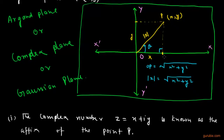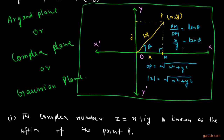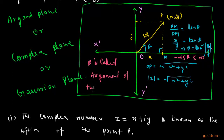Suppose this point is M. The ratio of PM over OM is equal to tan theta. Therefore, y over x equals tan theta. This implies that theta is equal to tan-inverse of y over x. This theta lies between negative infinity to positive infinity, and this theta is called the argument of the given complex number.